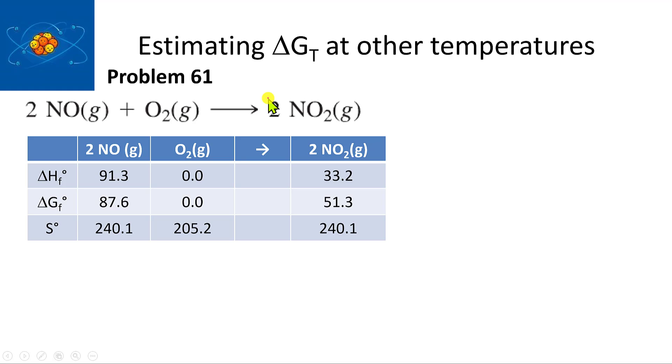I went ahead and pulled all the numbers from the table. Delta H and delta G of formation are zero for O₂, but entropies are actually measured. One mistake students make is assuming that for oxygen, S is zero, but because of the third law of thermodynamics, there is actually a value for that.